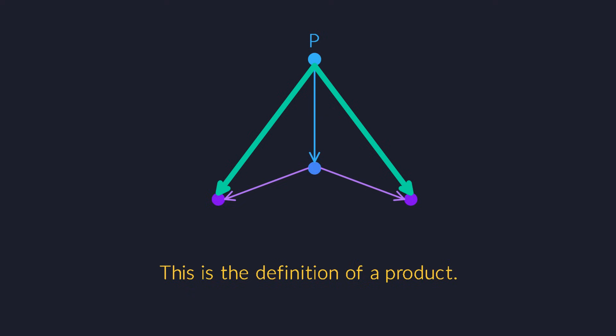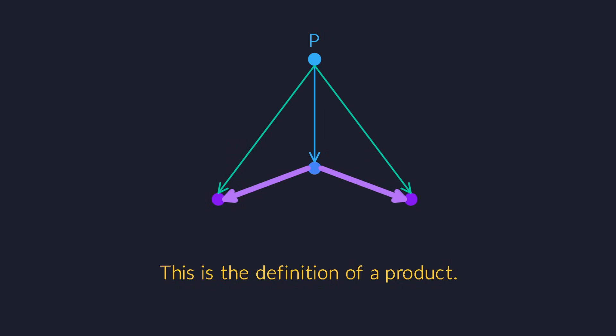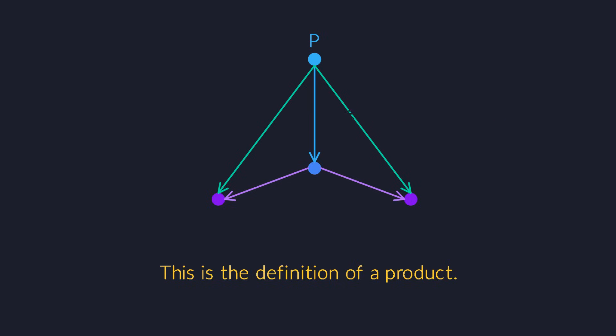And then the definition says that if we can extract those two pieces of information from this mystery type, we should always be able to construct a pair that contains exactly those two pieces of information — nothing more, nothing less. The constructor has to be unique for any given type p. There has to be one and only one way to create pairs from persons, fruits, cars, planets or other objects.